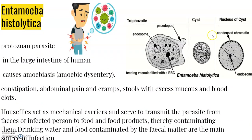Entamoeba histolytica is a protozoan parasite found in the large intestine of humans, which causes amoebiasis or amoebic dysentery. Symptoms include constipation, abdominal pain and cramps, and stools with excessive mucus and blood clots. House flies serve as mechanical carriers to transmit the parasite to food. Drinking water and food contaminated by fecal matter are the main causes of infection, so hygienic conditions must be maintained.